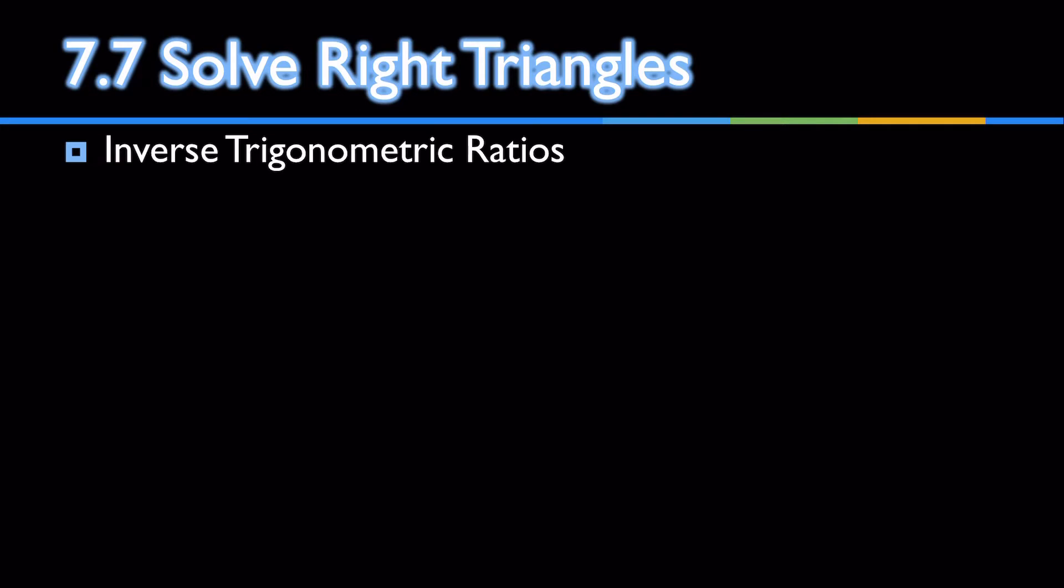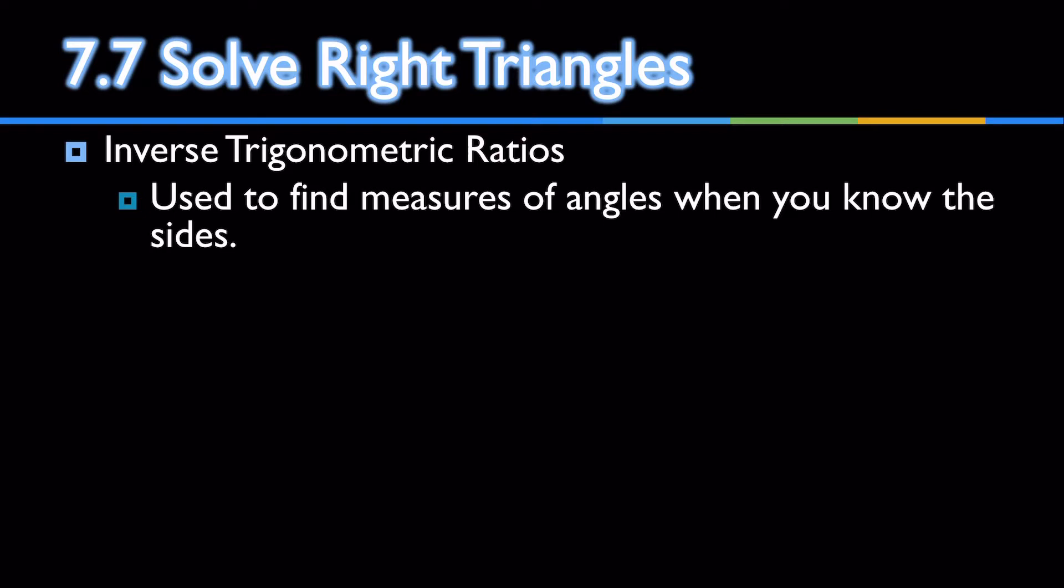To find the angles, you'll have to use the inverse trigonometric functions. These are used to find the angles when you know the sides. This little negative one here means inverse. The only time you use the inverse is when you're looking for the angle.